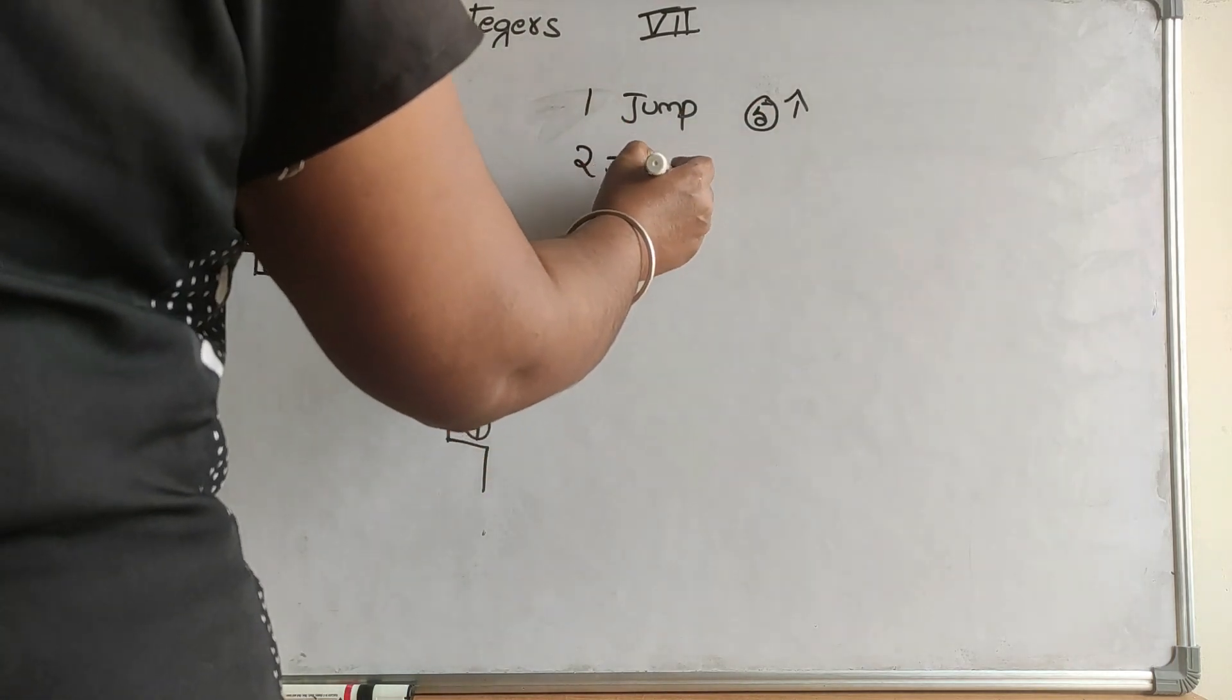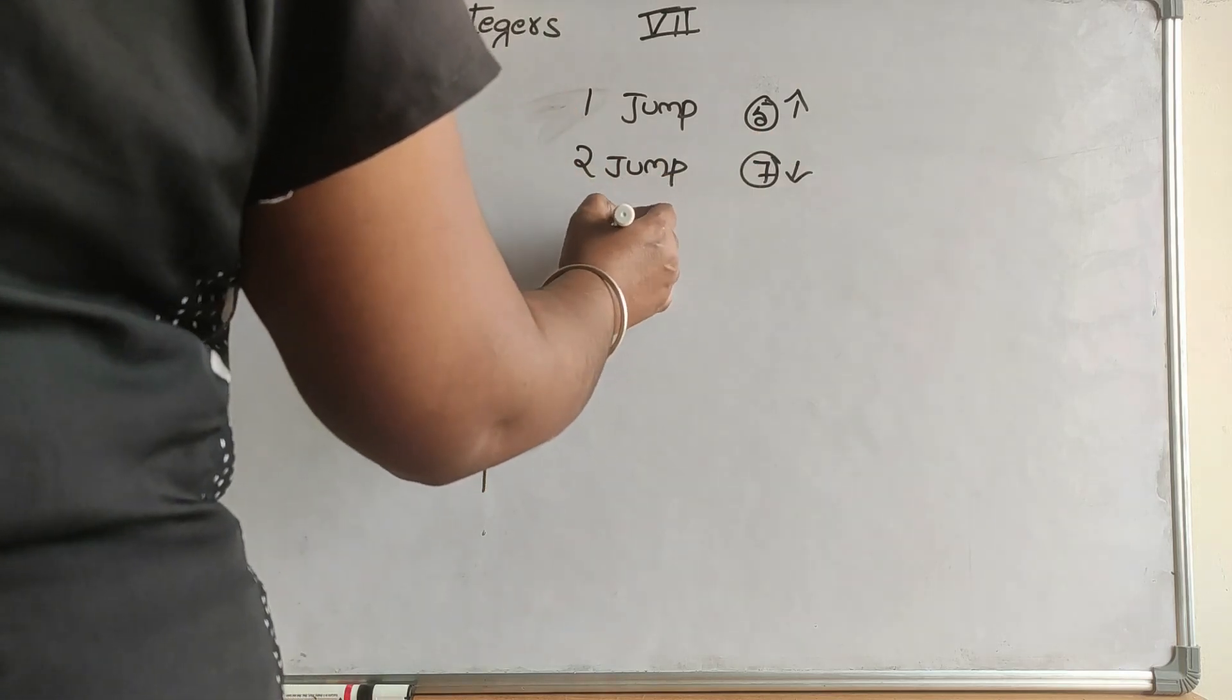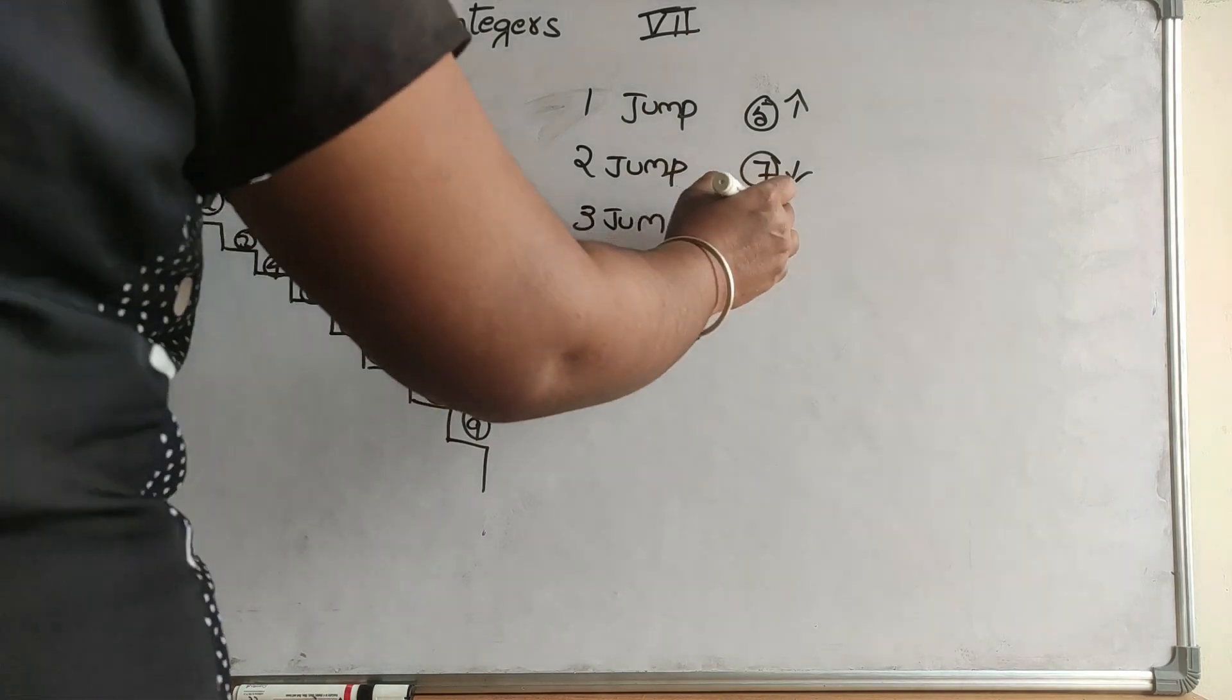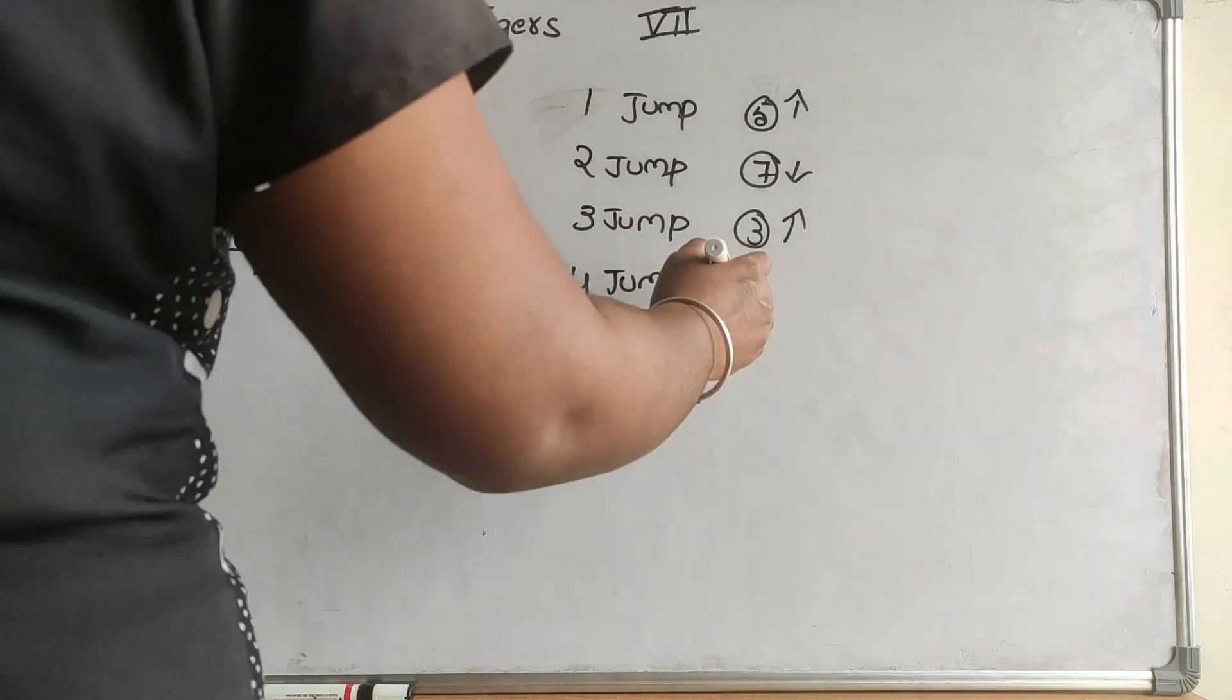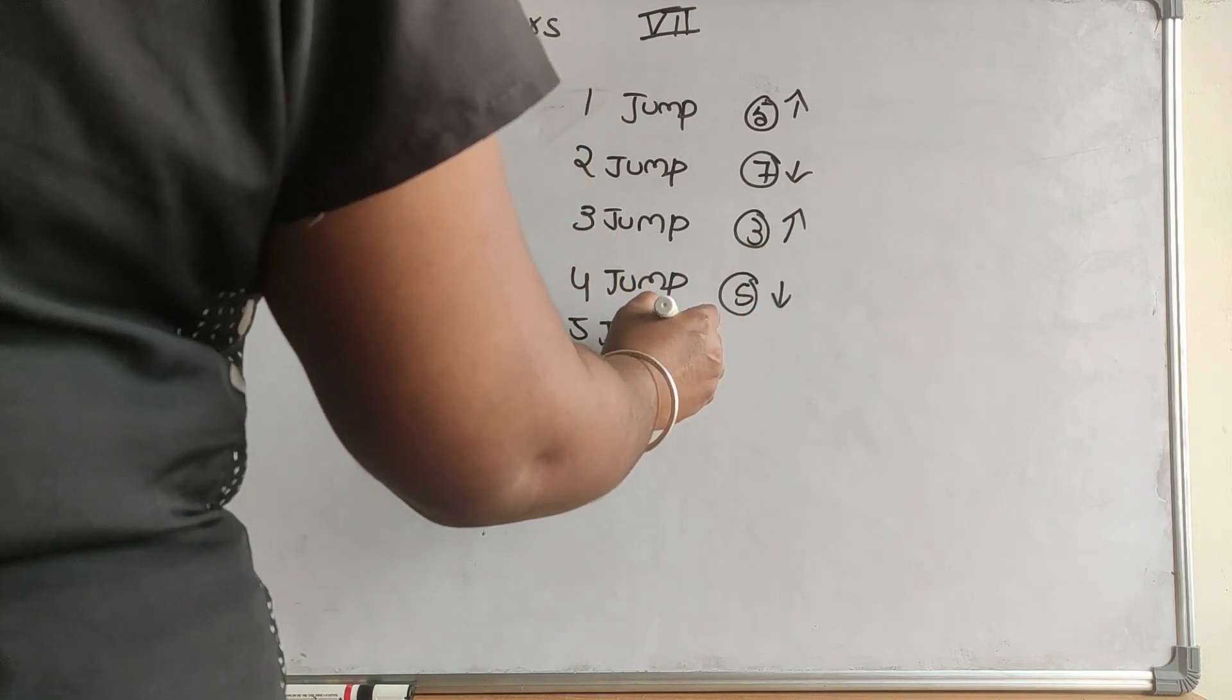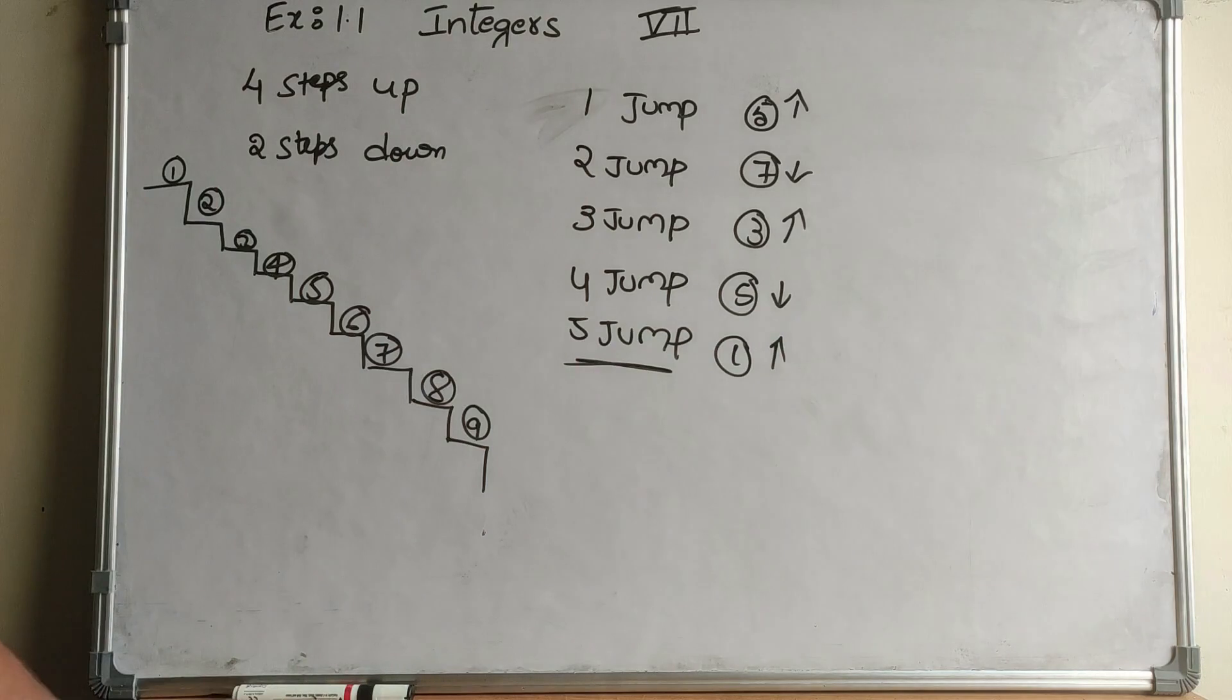In the second jump, it comes down from 5 by 2 steps to 7th, coming down. Third jump goes back 4 steps from 7 to 3rd step, going up. Fourth jump comes back 2 steps down to 5th. Fifth jump, when it goes 4 steps back from 5, it will be on the 1st step. So in 5 jumps itself, it moves to the normal place.